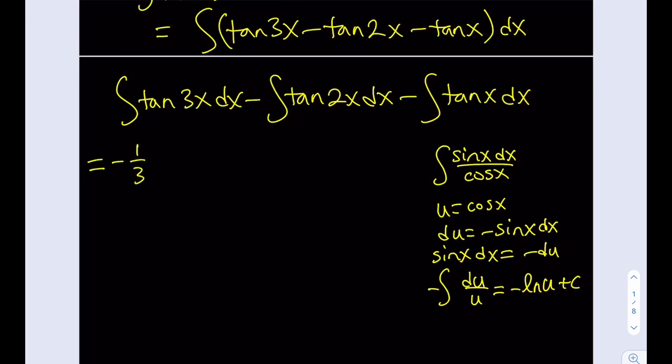And I'm kind of skipping the absolute value business here. If you had a definite integral you would need to worry about that, but right now I'm just going to write it as ln. So this is going to be negative 1 third of ln of sine 3x.